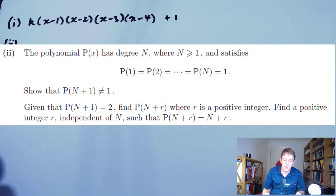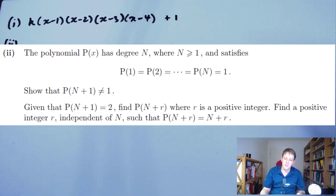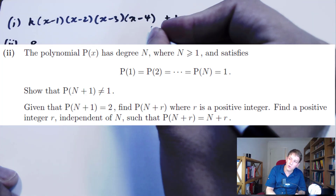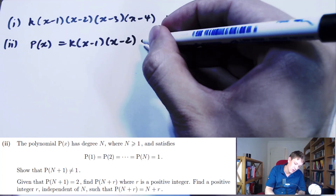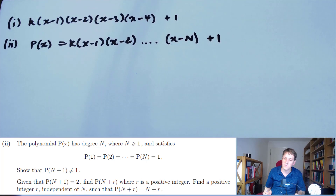Part 2 says: the polynomial p(x) has degree n ≥ 1 and p(1) = p(2) = ... = p(n) = 1. This is saying something very similar to the first part — p(1)=1 by the remainder theorem is the same as saying if divided by (x-1) it leaves a remainder of 1. So instead of just going up to 4, this polynomial p(x) is going to have (x-1)(x-2)...(x-n) plus 1. It says: show that p(n+1) is not equal to 1.